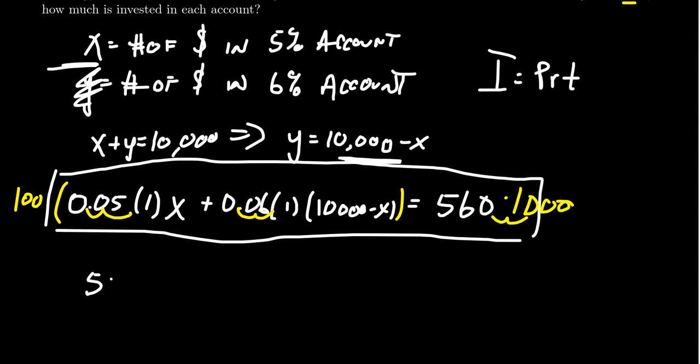So we end up with 5X plus 6 times 10,000 minus X. This is going to equal 560 and then two more zeros. So 56,000.